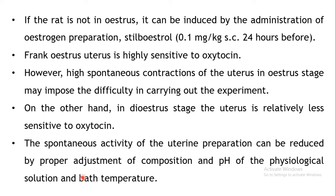You can easily identify the stage of the estrus cycle by preparing vaginal smears. If the rat is not in the estrus cycle, it can be induced by administration of an estrogen preparation — that is, stilbesterol. This can be injected at a dose of 0.1 ml per kg subcutaneously 24 hours before performing the experiment. You can then observe the vaginal smear after 24 hours to confirm the stage.